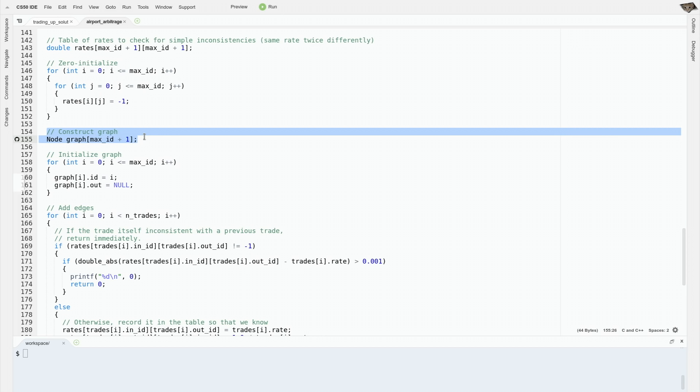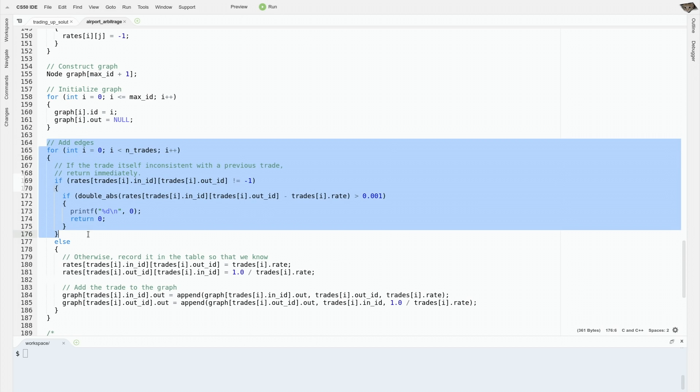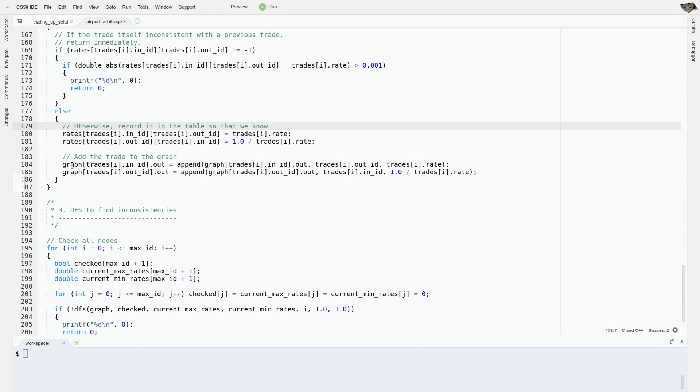Meanwhile, we'll be constructing the graph. To construct the graph, we'll go through all the trades. We'll check to see whether this trade already disagrees with a different trade that we've already seen. If it is, we'll report an inconsistency. Otherwise, we'll add it to the graph. We'll add it to the graph by doing our linked list append, that function that we defined earlier, to the output edges of this node, and we'll also define the reverse edge, saying that we can do the currency exchange backwards by doing one over the rate instead of the rate.